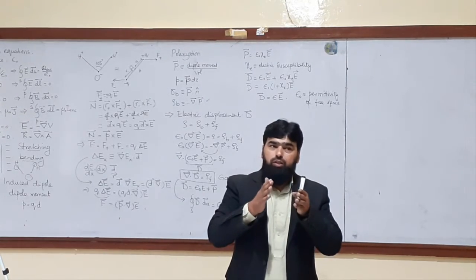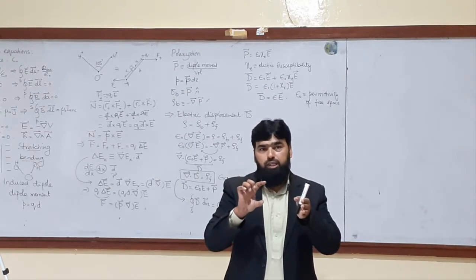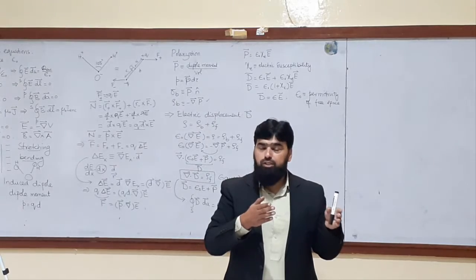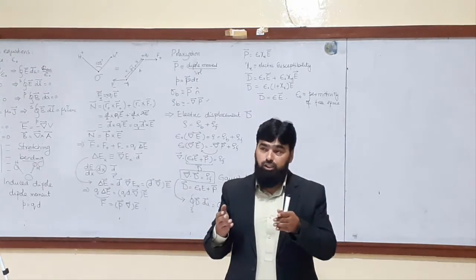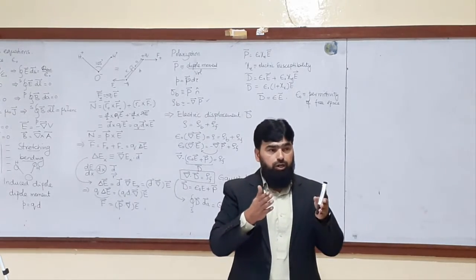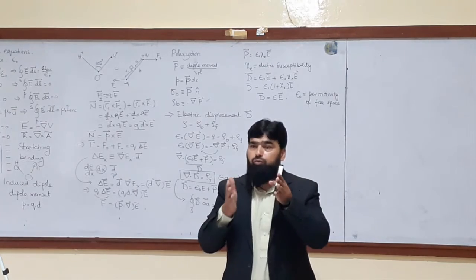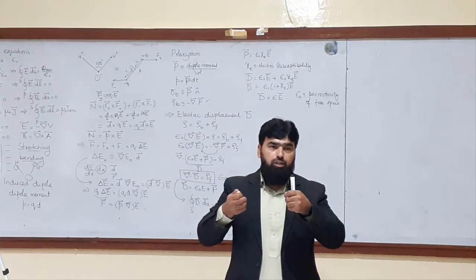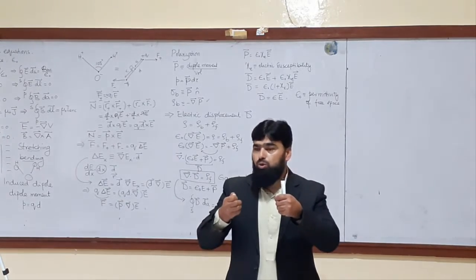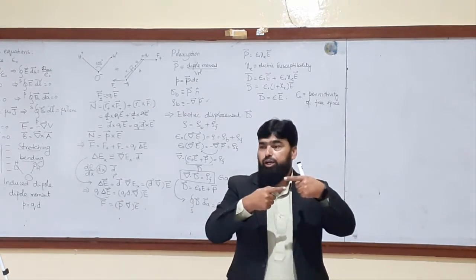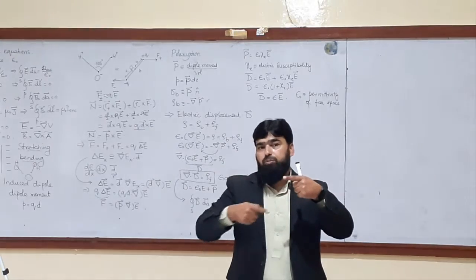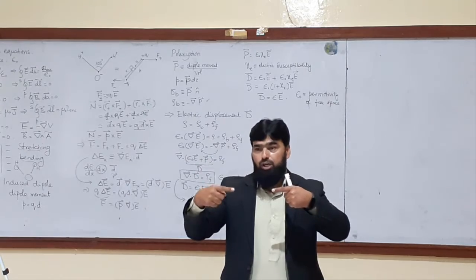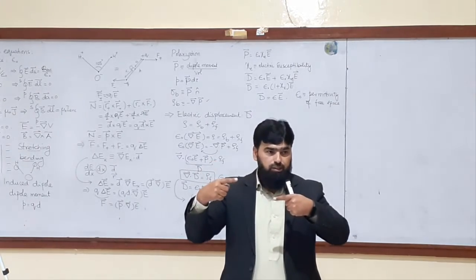We know that permittivity is inversely proportional to the field, and the reason for it is polarization. When you apply a field to a material, it reverses its internal field — what we call the local field — opposite to the applied electric field. So this permittivity is behaving like resistance. In one word, permission is resistance — it is resisting the electric field. In the equation of electric field, we write 1 over 4π ε₀ times Q over r squared, so it is inversely proportional to ε₀ because it is opposing the field.